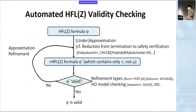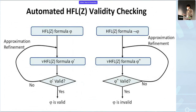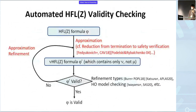If phi-prime is valid, we can conclude the original formula is valid; otherwise we go back to the first phase to refine the approximation. This method can only conclude validity, not invalidity. But we can run the same procedure on the negation of the given formula in parallel to decide whether the formula is valid. Of course, the validity checking problem itself is undecidable because we can encode various verification problems, but at least this method gives an incomplete but sound and fully automatic method.